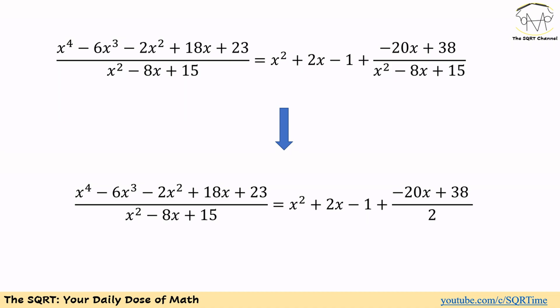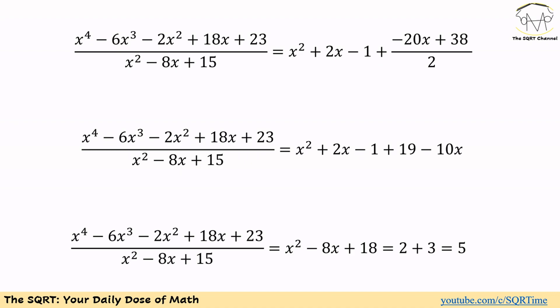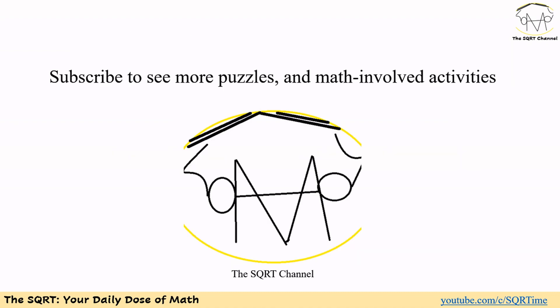The result of the division is x squared plus 2x minus 1 plus (negative 20x plus 38) over (x squared minus 8x plus 15). Since x squared minus 8x plus 15 equals 2, the remainder fraction becomes (negative 20x plus 38) over 2, which simplifies to negative 10x plus 19. Then the full expression simplifies to x squared minus 8x plus 18, which equals (x squared minus 8x plus 15) plus 3, giving us 2 plus 3, for a final answer of 5. Thanks for watching — if you'd like to see more math puzzles, please subscribe to the channel.